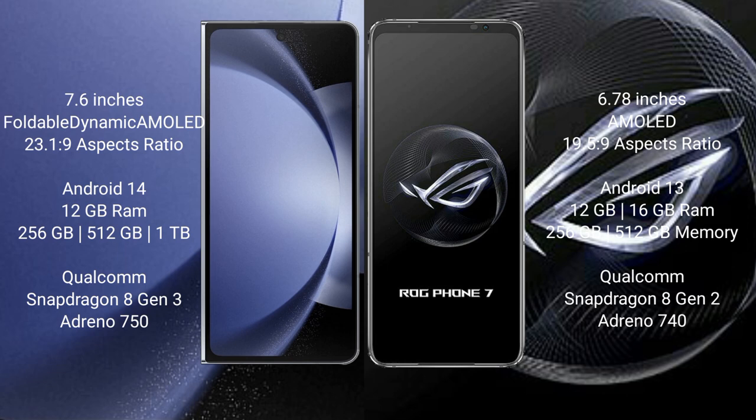The Samsung Galaxy Z Fold 6 features a Qualcomm Snapdragon 8 Gen processor and GPU Adreno 750. The ASUS ROG Phone 7 comes with 12GB or 16GB RAM and 256GB or 512GB internal storage, a Qualcomm Snapdragon 8 Gen 2 processor, and GPU Adreno 740.